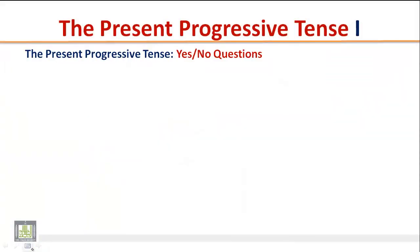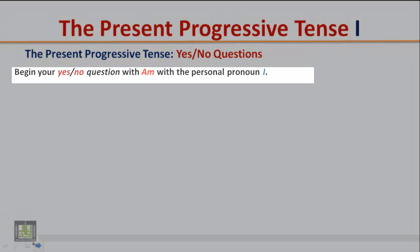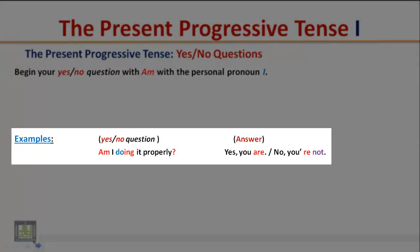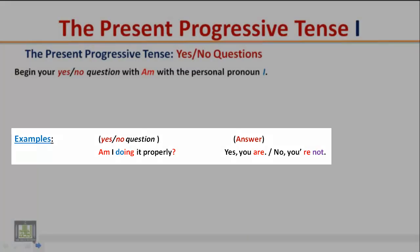Yes/no questions: Begin your yes/no question with 'am' when using the personal pronoun 'I'. Example: 'Am I doing it properly?' Answer: 'Yes, you are.' Or: 'No, you're not.'